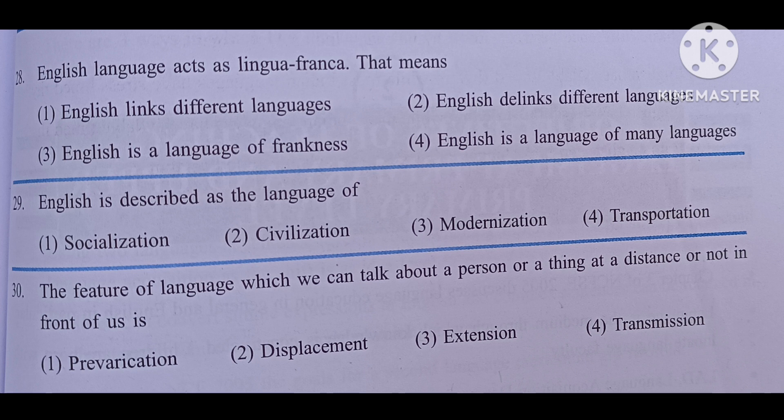English is described as the language of: number one, socialization; number two, civilization; number three, modernization; number four, transportation. The answer is modernization.